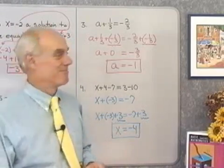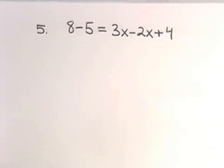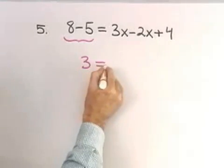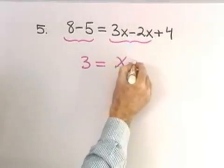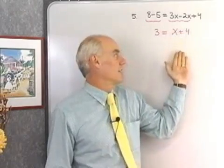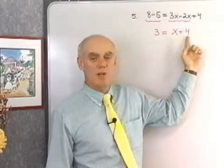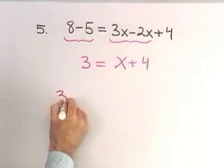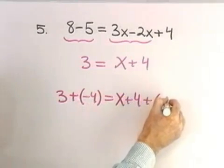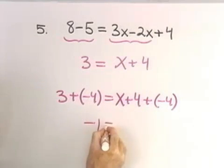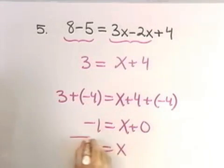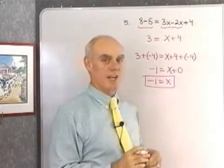Let's look at one last equation: 8 minus 5 is equal to 3x minus 2x plus 4. I want to simplify each side as much as possible. 8 minus 5 simplifies to 3. 3x minus 2x is 1x plus 4. My variable appears on the right side of the equation, and that's fine — I'll isolate x there by getting rid of the 4, adding its opposite negative 4. 3 plus negative 4 is equal to x plus 4 plus negative 4. That gives negative 1 equals x plus 0, which is x. So negative 1 equal x, or x equal negative 1.